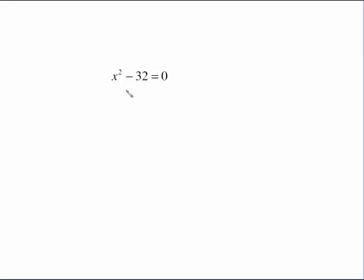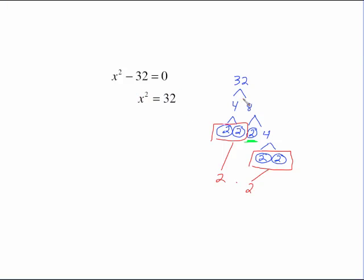X squared minus 32 equals 0. Same process. Let's add the 32 over to the other side because we want to have this x squared item isolated. We want this alone because this is the key that says let's do the opposite to solve. The opposite of squaring is taking the square root. Now with that we're going to get a plus or minus. Also the square root of 32 unlike the last couple ones is not a perfect square, but it is something we can factor tree out.